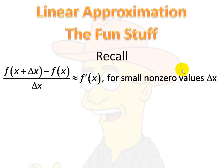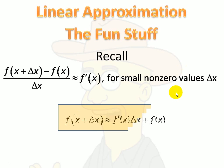That f of x plus delta x minus f of x over delta x is approximately the derivative. Okay? In other words, when we don't let delta x go to zero, but it's close to zero, we know that's approximately the derivative. Now, doing a little algebra, multiplying both sides by delta x, and then adding the f of x, we get this formula.